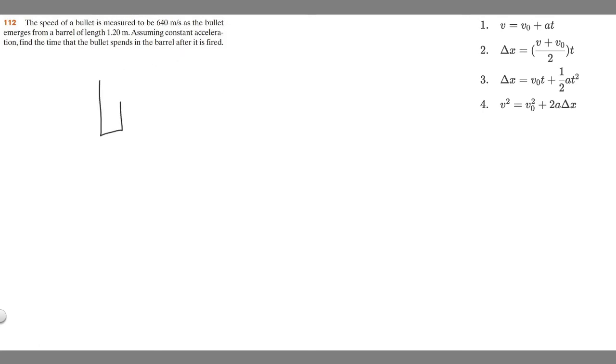So imagine we have this gun here. And so we know the speed of the bullet is measured to be 640 meters per second as it emerges from the barrel. So imagine this is the barrel. And so it's going to be leaving this at 640 meters per second. And so the barrel length, this length right here is going to be 1.2 meters.